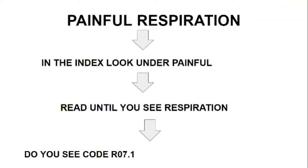Go to your index, which is in the front of your book, under P, and go to 'pain.' You're going to see a ton of reasons to have pain, but we're simply going to go down under pain and look for 'respiration.'